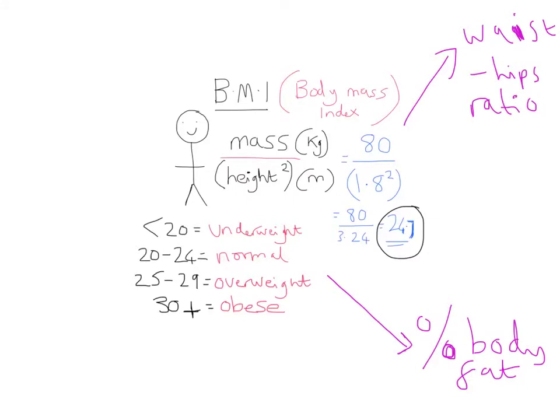Something called the waist to hips ratio is far better than BMI. With the waist to hips ratio, this gives a good indication of the distribution of body fat, especially around the abdomen, because greater deposits of fat around the abdominal area can indicate a greater risk of coronary heart disease and diabetes.